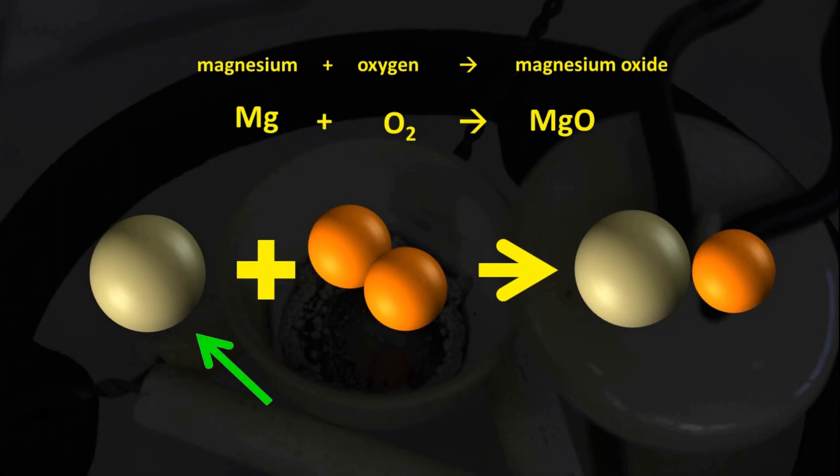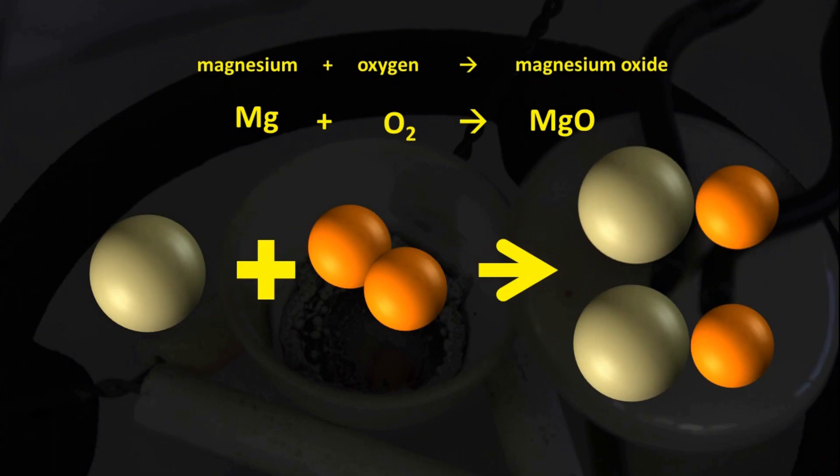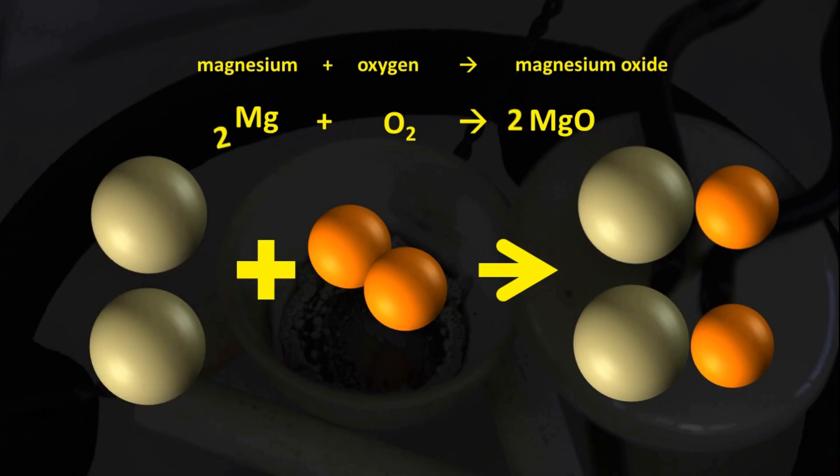Now there's one Mg atom on the left, and one Mg atom on the right, so the magnesium atoms are balanced. However, we started with two O's, so in fact we make two MgO's. We need to put a 2 in front of the MgO, so that the O's are balanced. Now we have two Mg's on the right, so we have to put a 2 in front of the Mg, and our equation is balanced.